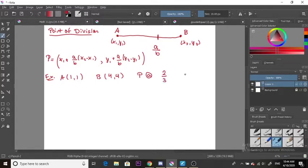So this is our a and then this is our B. This is our x1, y1 and x2, y2. Let's put it into our formula. So our x1 is positive 1 plus 2 over 3 times—we're gonna do 4 which is x2 minus 1.